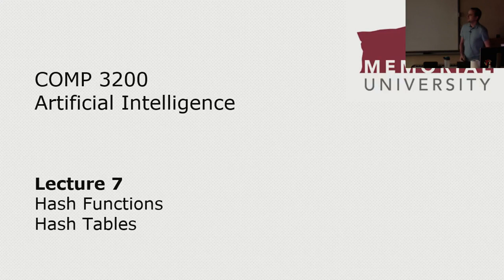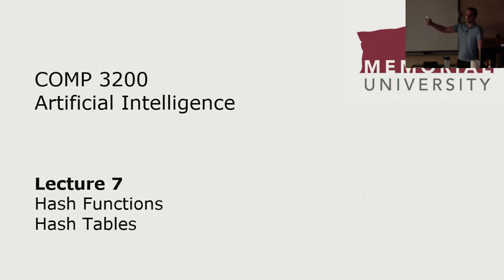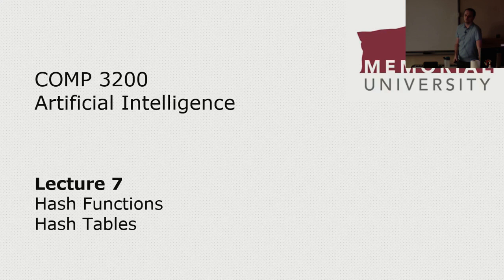I'll get started with today's lecture. We're taking a bit of a departure today into a slightly different topic, but this can be used on assignment two. There were a couple of slides in the last lecture about assignment two that said you could use something like a hash table to implement the closed list for a much more efficient lookup, rather than iterating through a list to find a member. It turns out there are a lot of places in AI where you might want to use a hash table.